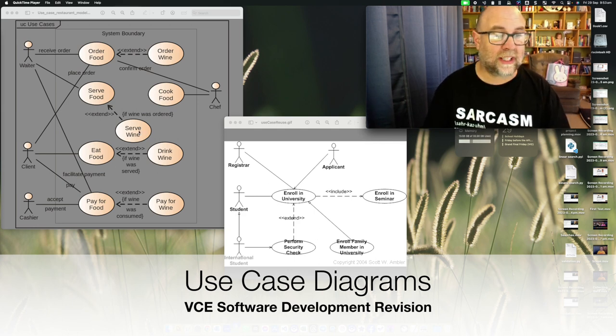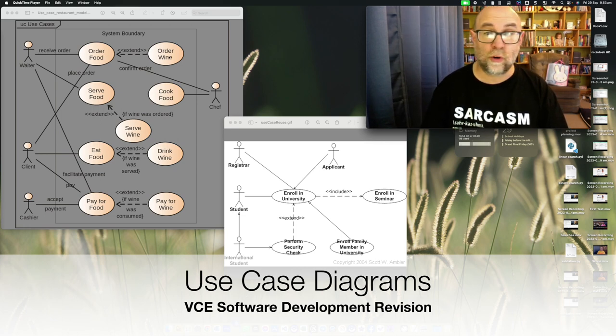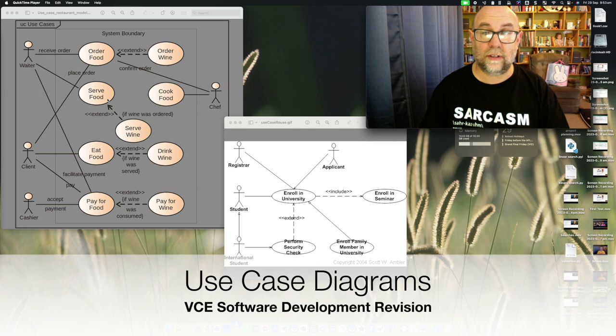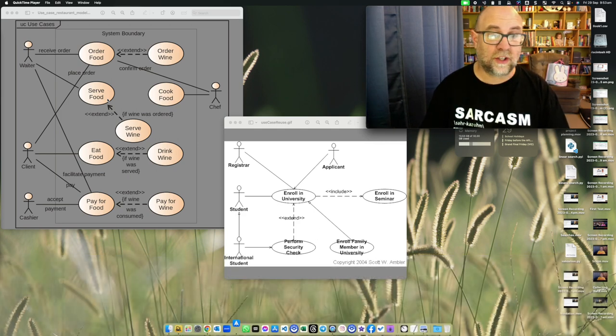And this diagram only has extend, so I might order food and I might just order wine, apparently in this case I can't just order wine which might be true in a restaurant. Likewise, I serve wine might go with serving food but they're not serving wine separately, so that's about whether something is optional or not.